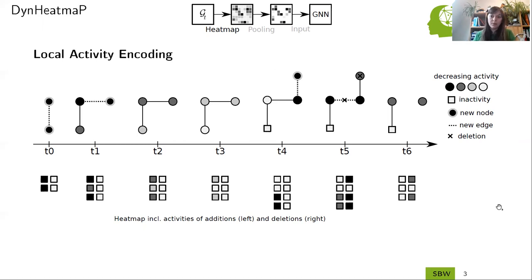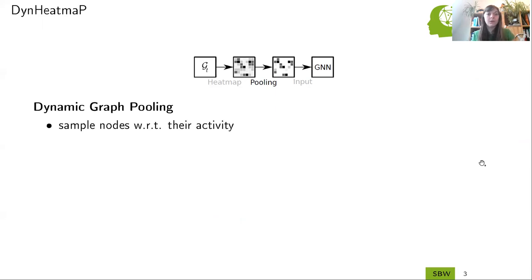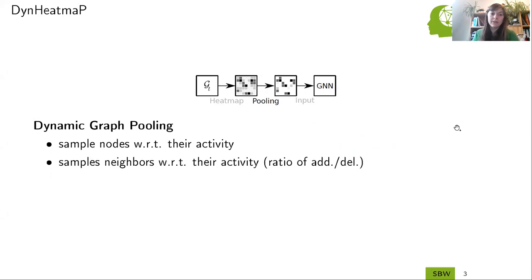Now we want to pool from these graphs using the heat maps as probability as pooling probabilities for the nodes. We want first to sample a certain number of nodes from these graphs with respect to their activity, addition and deletion. And we then want to sample from the neighbors a fixed number of neighbors with respect to their activity. Here, we also want to respect a certain ratio of additions and deletions in the sampling to address unbalanced data sets.